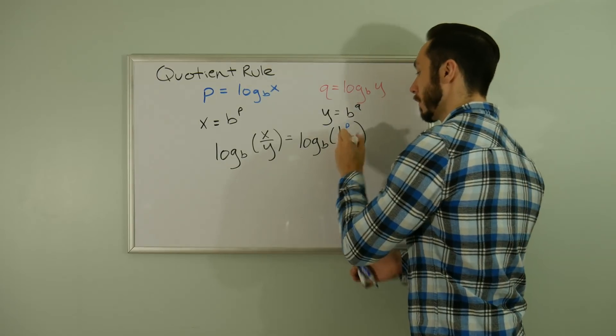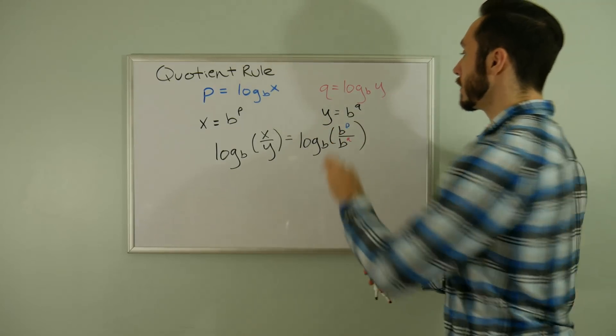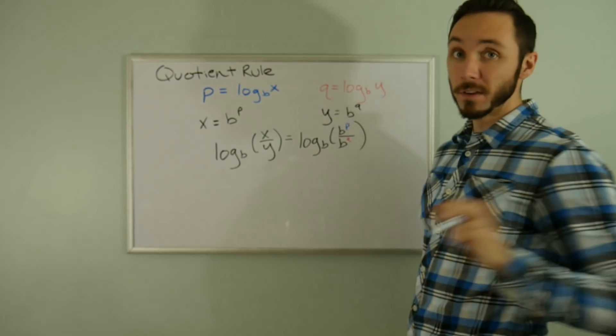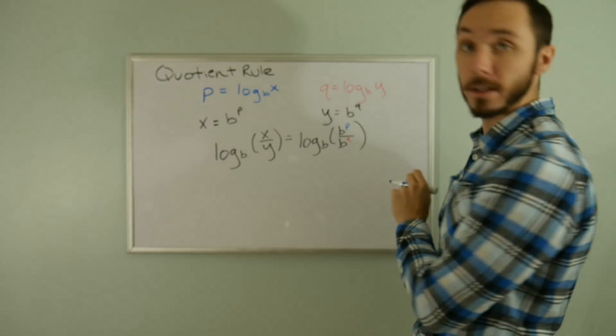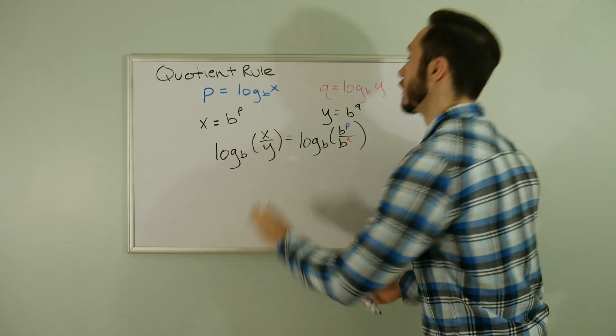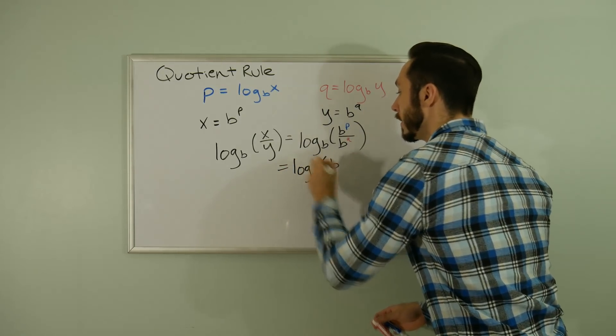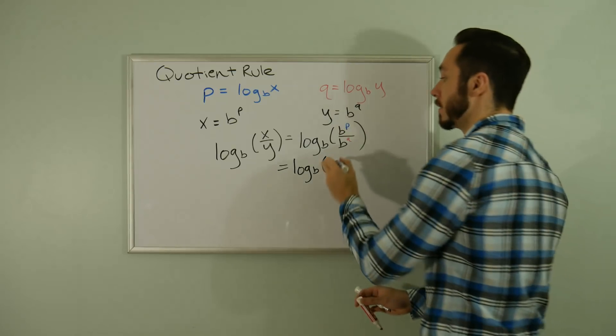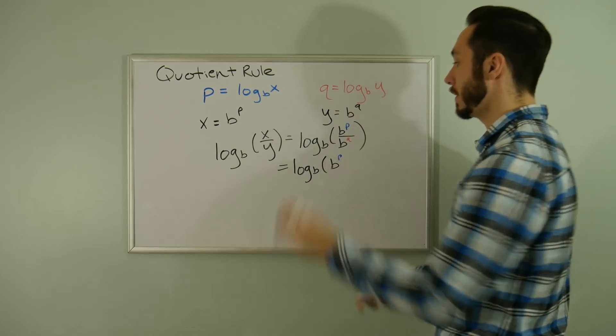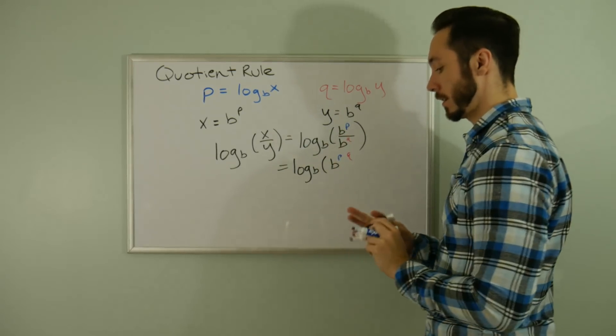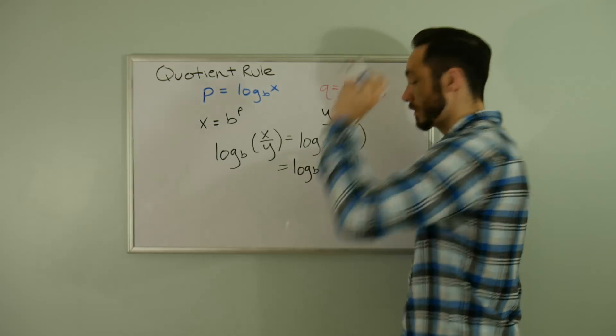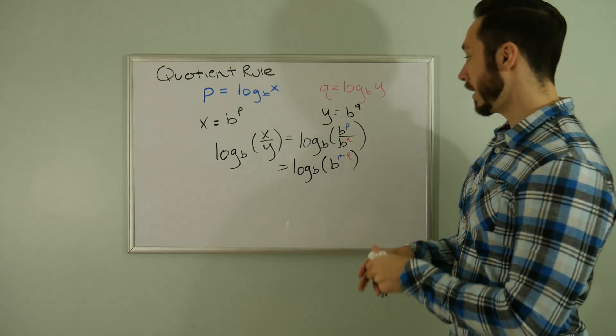Now I'm going to simplify these exponents. I know that if I'm dividing the bases, I'm subtracting the exponents. So now we have log base B of B to the P minus Q power. I'll put my P there, my Q there, and we subtract.